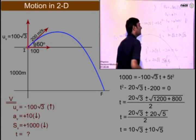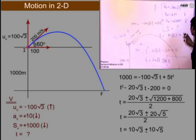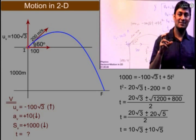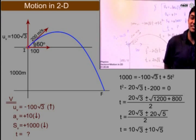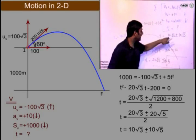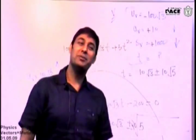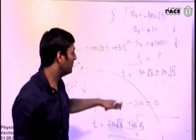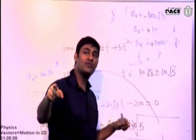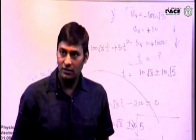Now I understand many of you will say 10 root 3 plus 10 root 5 or 10 root 3 minus 10 root 5. Now you should know that 10 root 5 is greater than 10 root 3. If I take 10 root 3 minus 10 root 5, it is a negative thing. Time cannot be negative, right?